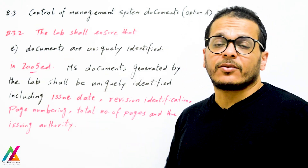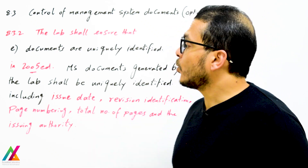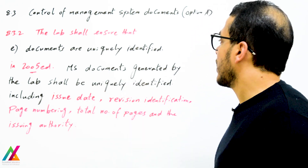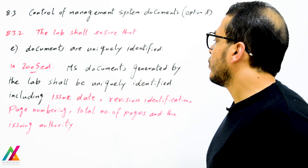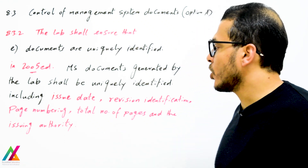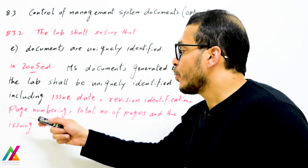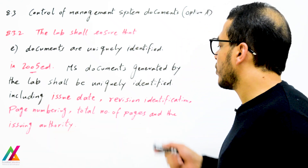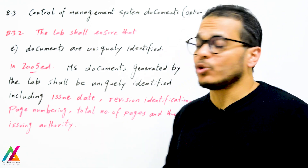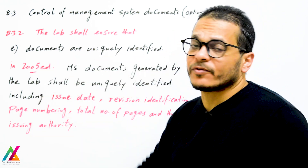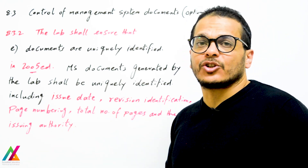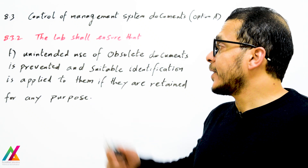The lab shall ensure that documents are uniquely identified. This is more flexible than the 2005 edition, where management system documents were required to include: issue date, revision identification, page number, total number of pages, and issuing authority. In 2017, identification is still required but the specific fields are not mandated — more flexibility is given to the lab.